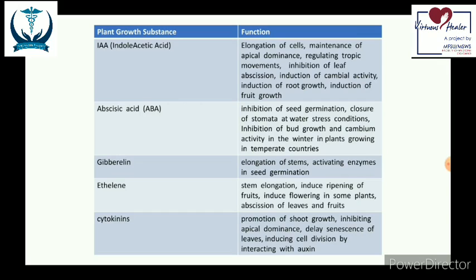Gibberellins are responsible for elongation of cells and stems, and activating enzymes in seed germination. Ethylene is responsible for stem elongation, is used to induce ripening of fruits, and is used to induce flowering in some plants.